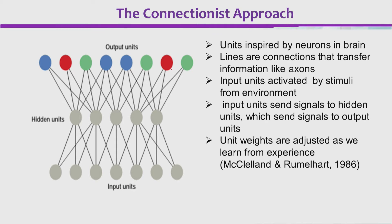The lines are connections that transfer information like axons in the brain, in the neuron. Input units are activated by stimuli from the environment. Input units send signals to the hidden units, and the hidden units then send signals to the output unit. Unit weights determine how much information is sent, and unit weights are adjusted as we learn from experience.